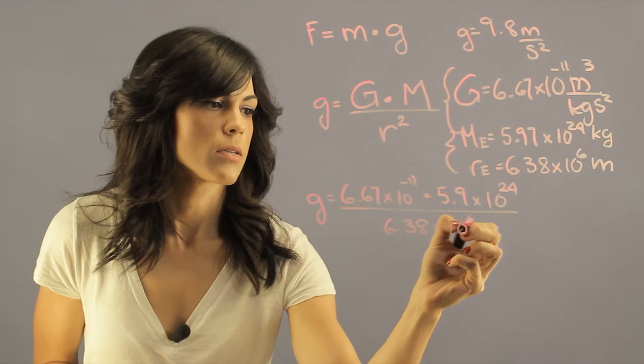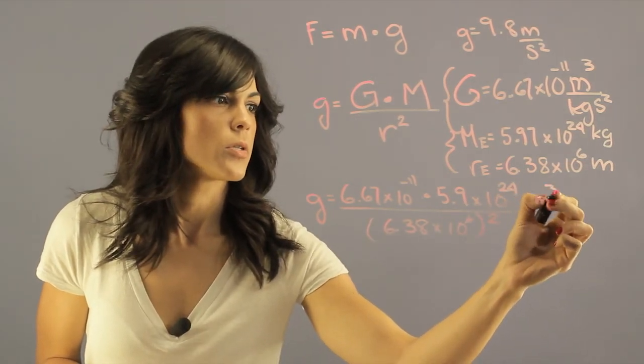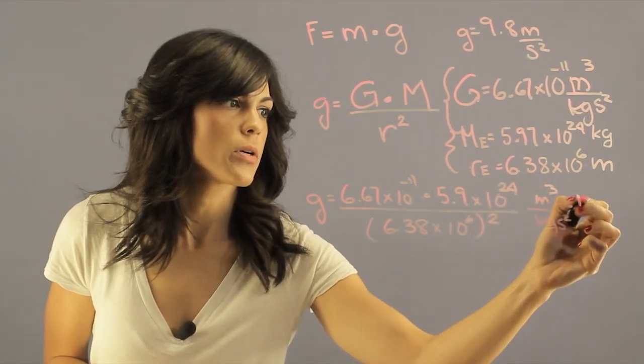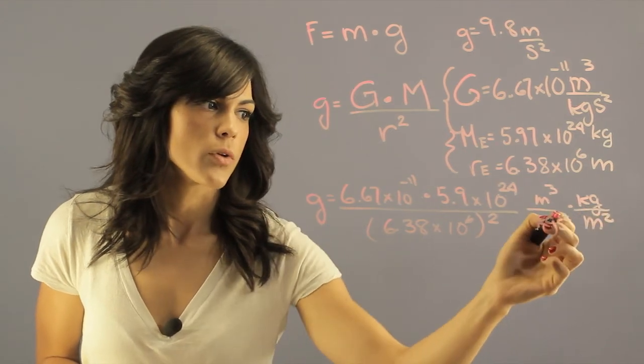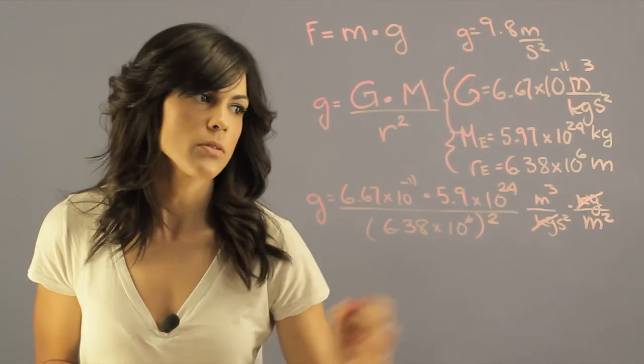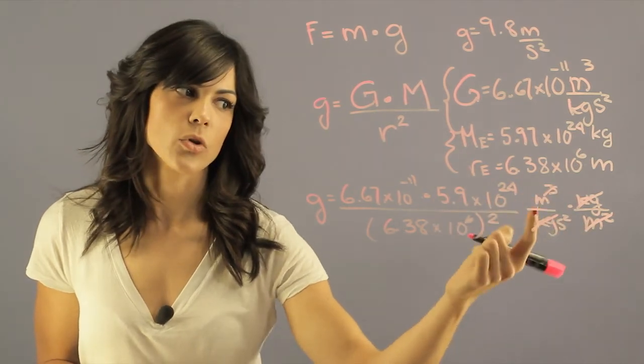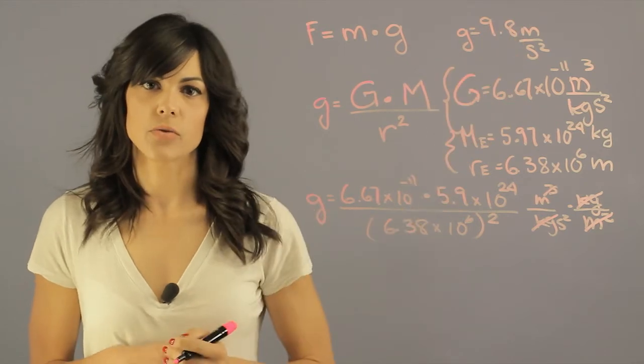Our units in this case are going to be meter cubed kilograms second squared times kilogram divided by meter squared. Kilograms and kilograms cancel, meter squares cancel and leave you with a single meter. So your answer is going to be in meters per second squared, which matches our gravitational strength.